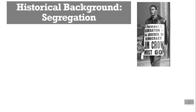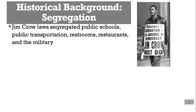This is a man protesting segregation, saying Jim Crow is the absence of democracy and Jim Crow must go. Jim Crow laws, if you're not aware, were laws in the United States that segregated public schools, public transportation, restrooms, restaurants, and the military. This spanned things like having separate schools for African-American students and white students, as well as bathrooms, drinking fountains, pools, and even cemeteries were segregated.